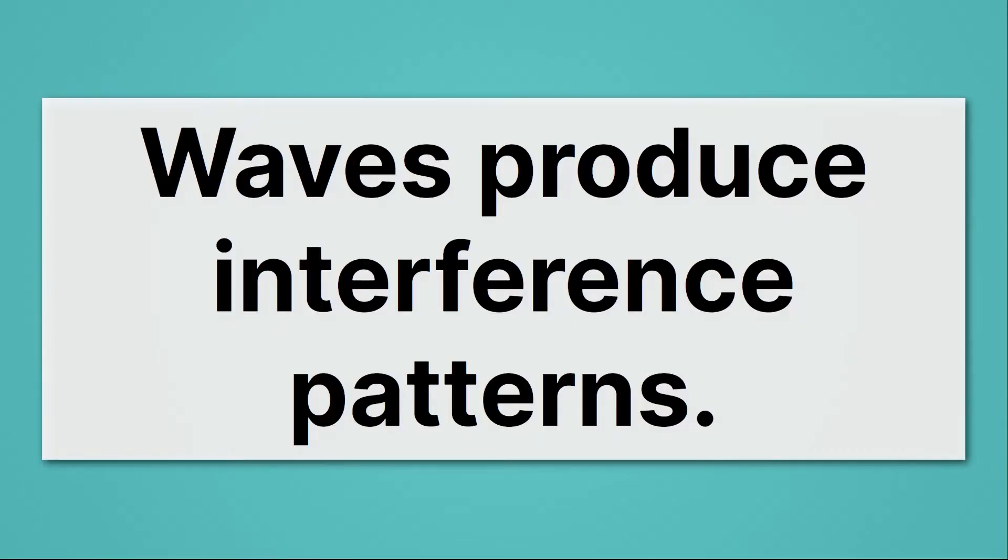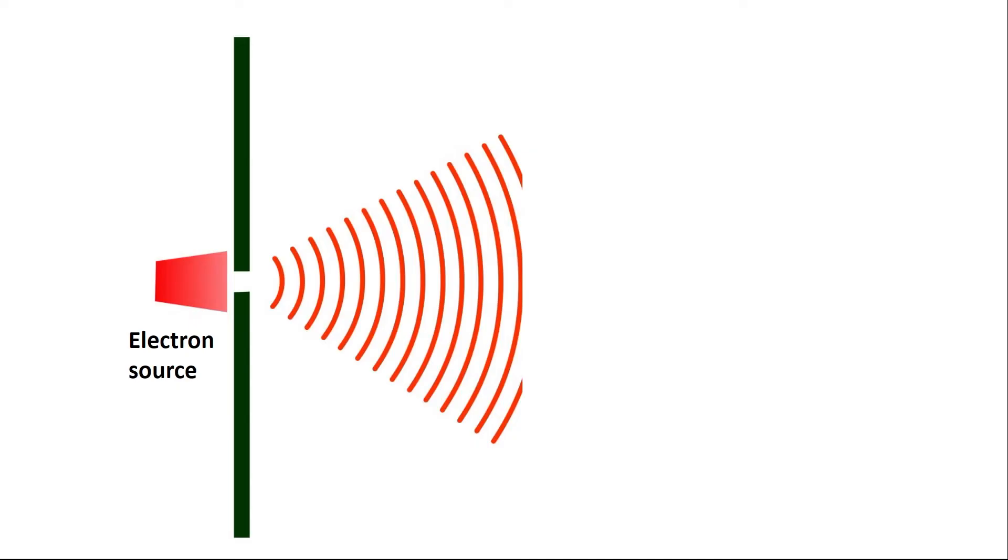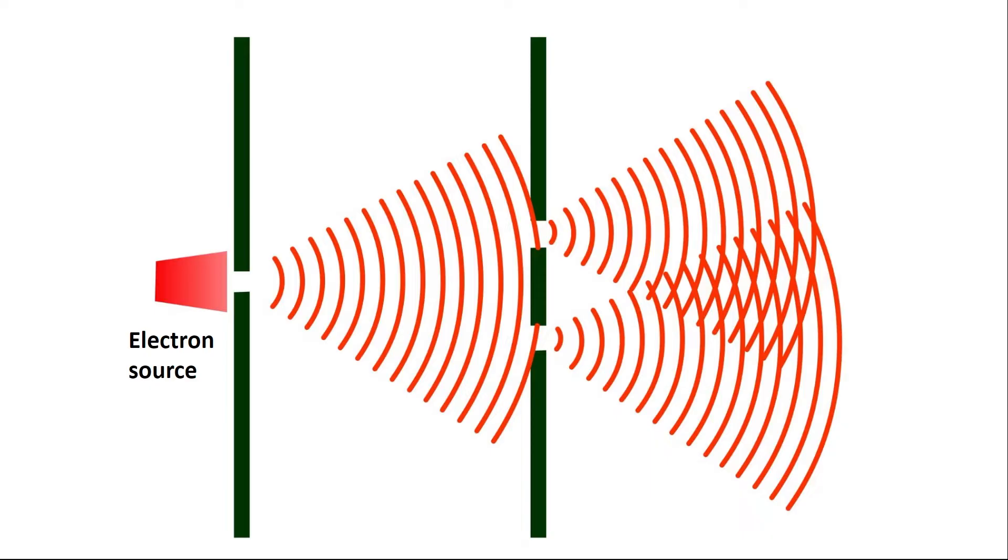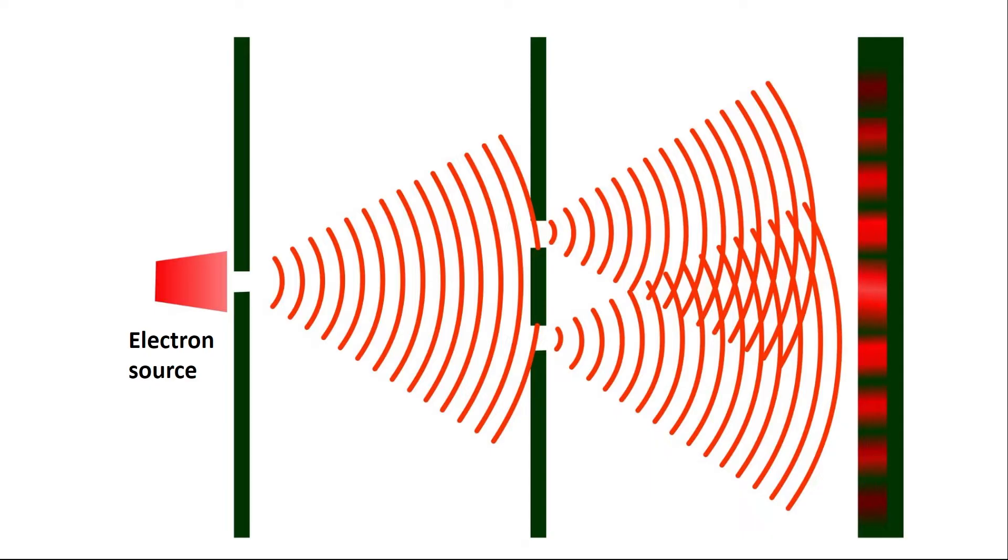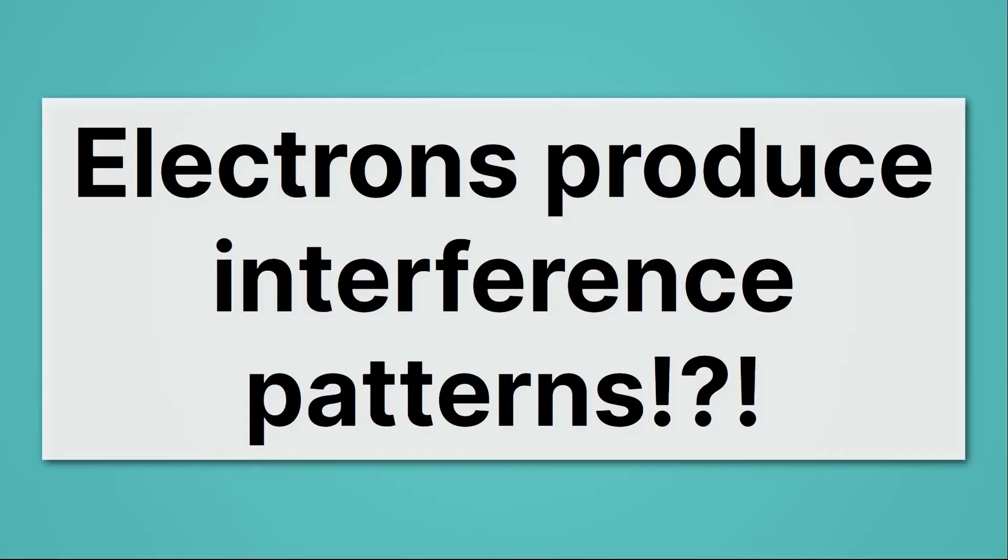Well, where our story gets crazy is that if we repeat this experiment with electrons, so now we have an electron source shooting out electrons, again hitting two slits, where the electrons hit is perfectly predicted by an interference pattern. The bright spots mean lots of electrons hit there, and the dark spots mean no electrons hit there. So electrons produce interference patterns? That's bonkers. So in this case, we see the electrons behaving like waves.